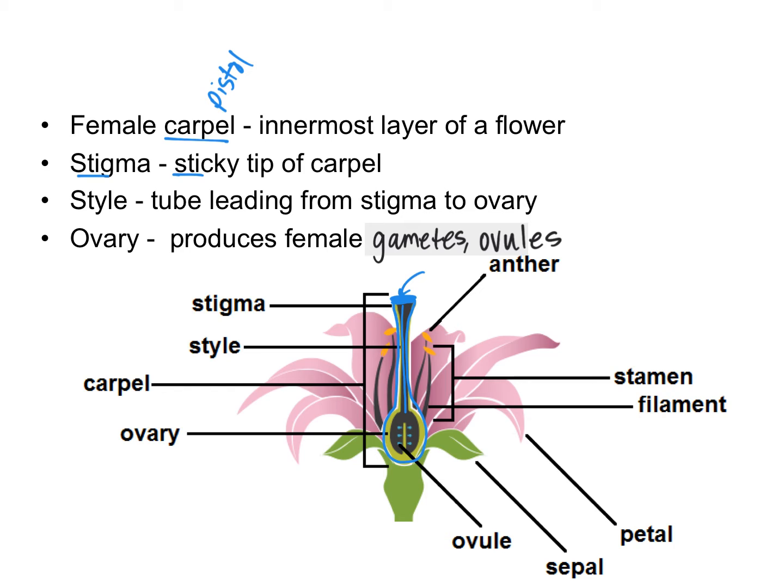All flowering plants do produce fruits, but that doesn't mean you want to eat all of them — some are edible, some are not. If the fruit is edible, say it's a flower on an apple tree, then the ovary will become the apple — the fleshy part that you eat — and the ovules will become the seeds.